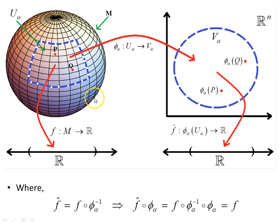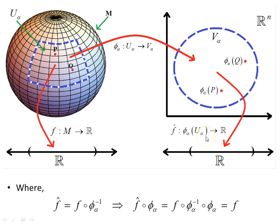f maps the manifold to the reals — it is a scalar function defined on the manifold mapping to the real numbers. f-hat maps the set phi_alpha of U_alpha, which is the image of U_alpha under the map phi_alpha, also to the real numbers. The relationship between f-hat and f is given by: f-hat equals f composed with phi_alpha inverse.